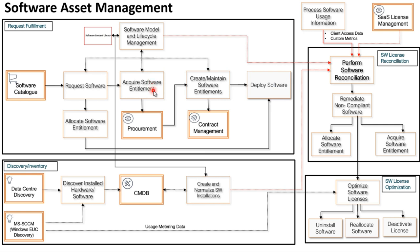Generally, the software asset management team will be involved in acquiring software licenses in bulk from different vendors, and they can map this information into software entitlements. A software license or entitlement can have a contract assigned to it depending on the vendor. When you request Visio, if the entitlement does not exist in the system, the procurement plugin allows you to automatically generate new entitlements for your request and then proceed with deployment.